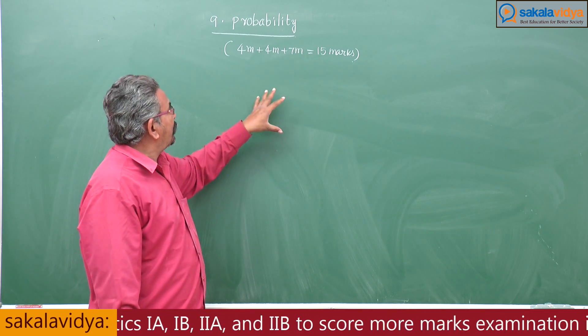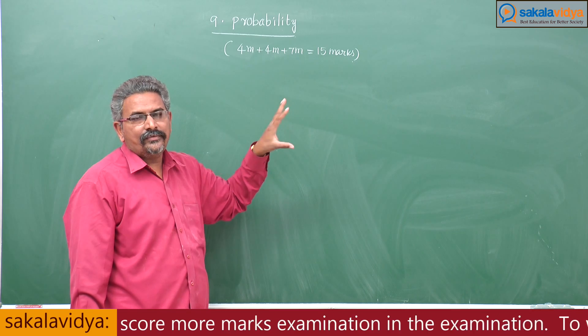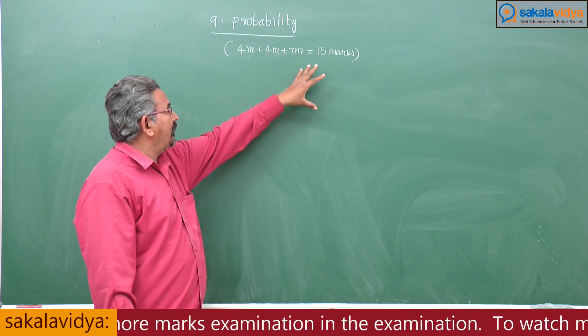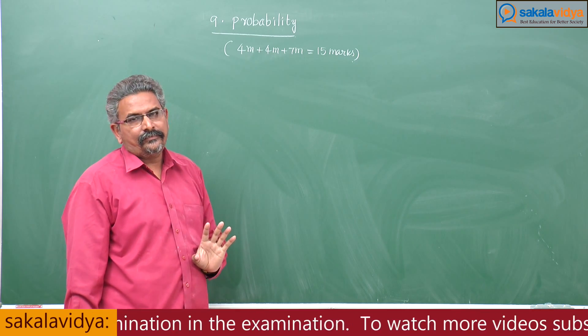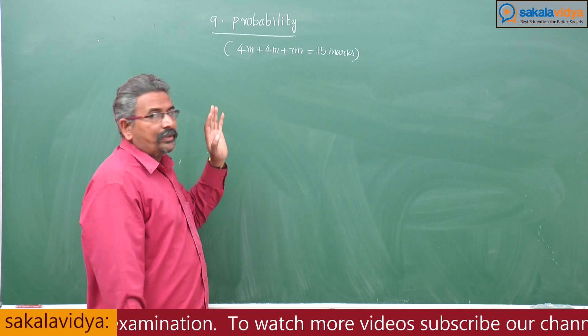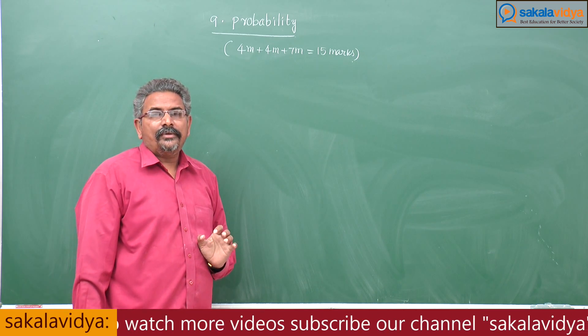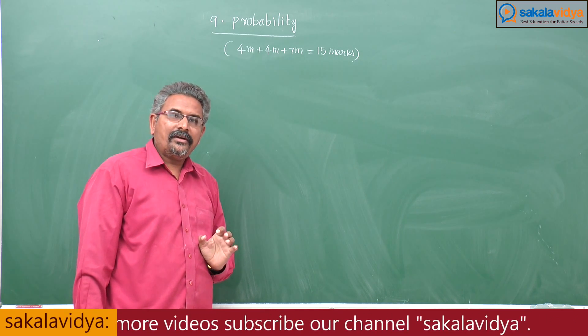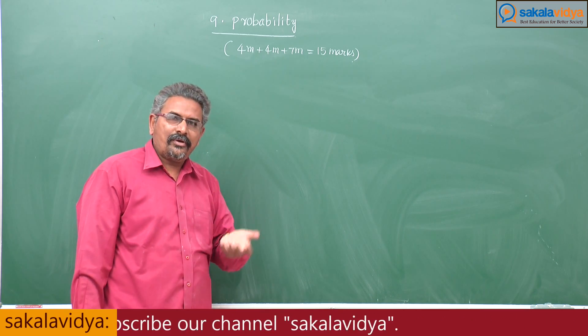If you practice the questions on probability, definitely out of 75, you will score 15 marks. Particularly in probability, some definitions may be asked under 4 marks and 7 marks.